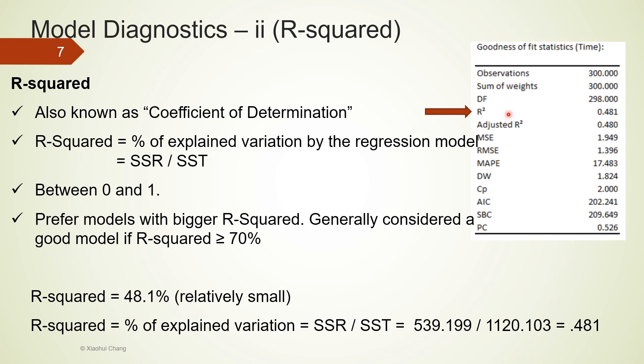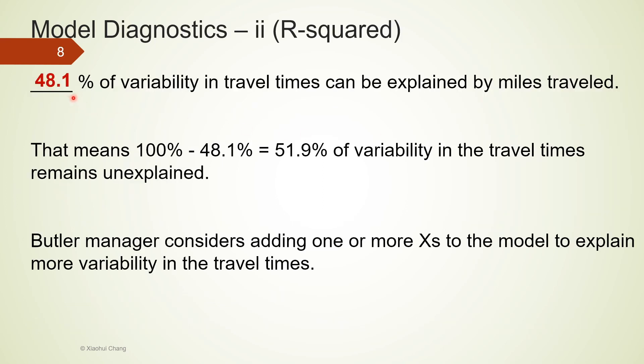By taking ANOVA analysis and looking at the R-squared, I think we can say that using miles alone to model time is a decent model, but probably not a very strong model given the R-squared is only about 48%. There are a bunch of other numbers that are also given in the goodness of fit table, for example RMSE, MAPE, and AIC. They are mostly metrics to assess how well the model fits the data. We will not talk about them in this video. The adjusted R-squared is particularly useful for multiple linear regression, as discussed in a separate video. From the definition of R-squared, we can write 48.1% of the variability in travel time can be explained by miles traveled. That means 51.9% of the variability in the travel time remains unexplained. The manager of this trucking company should consider adding one or more x to the model to explain more variability in the travel time. And this will be done in our multiple linear regression videos later.